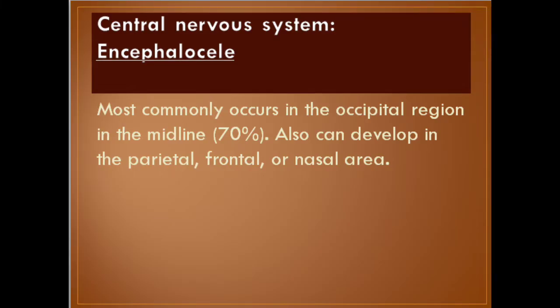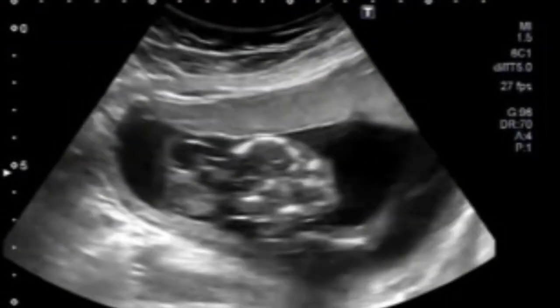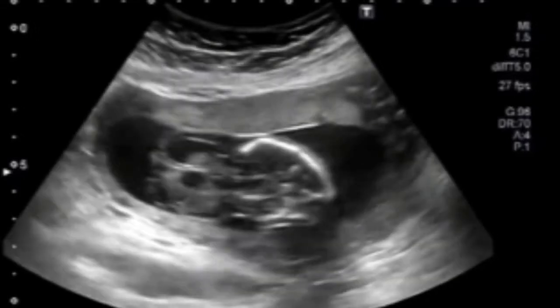Number two: encephalocele. It most commonly occurs in the occipital region, in the midline, in 70% of cases; it can also develop in the parietal, frontal, or nasal area. Imaging findings: spherical fluid or brain-tissue-filled sac extending through a defect in the bony calvarium.